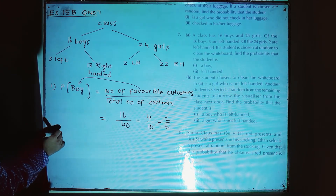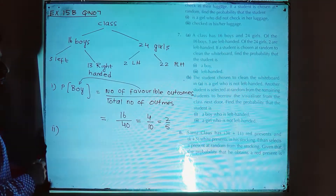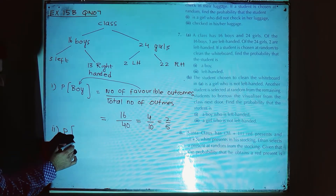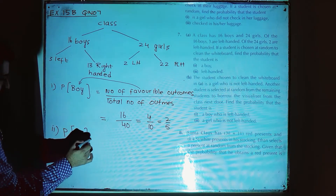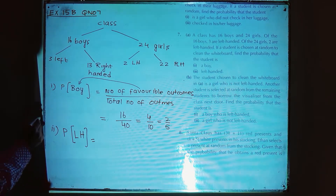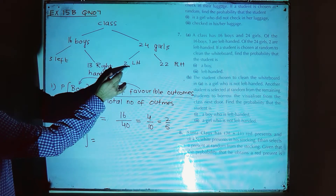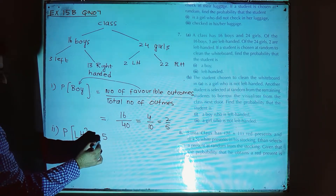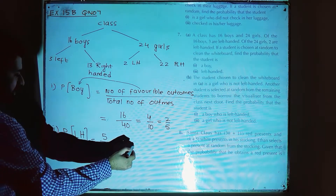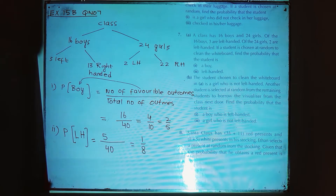The second part is: find the probability that the student is left-handed. The student may be a boy or a girl. Using the same formula, we have 3 left-handed students from boys and 2 from girls, giving a total of 5 left-handed students out of 40. So the probability that a left-handed student will clean the whiteboard is 5/40, which is 1/8.